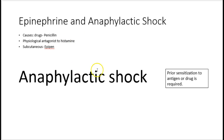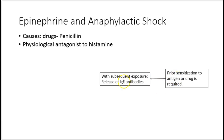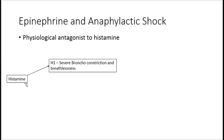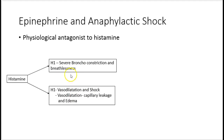In anaphylactic shock, prior sensitization to the antigen or drug is required, and with subsequent exposure there is release of IgA antibodies. These increased IgA antibodies bind to mast cells, leading to release of histamine in large quantities. Histamine acts on bronchial smooth muscles through histamine 1 receptors causing breathlessness, and on blood vessels causing vasodilatation, shock-like state, circulatory collapse, capillary leakage and edema.